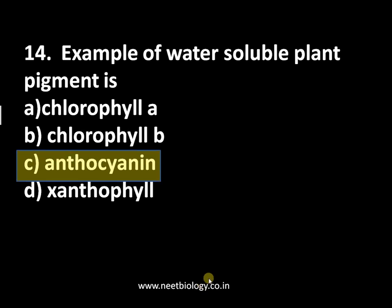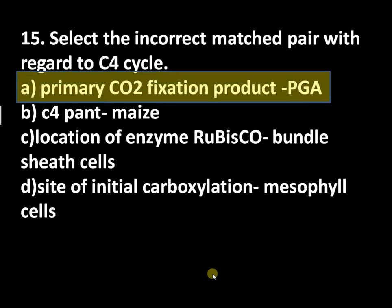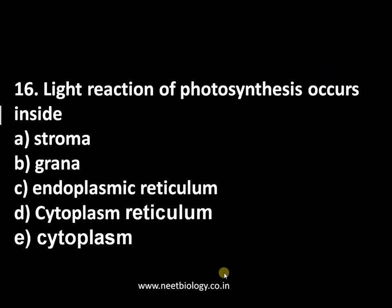Question number fourteen: an example of a water-soluble plant pigment is anthocyanin — refer to our video on pigments for more details. Question number fifteen: select the incorrect match with regard to the C4 cycle — option A: primary CO2 fixation product is PGA, option B: C4 plant is maize, option C: location of RuBisCO is bundle sheath cells, option D: site of initial carboxylation is mesophyll cells. The answer is option A — in the C4 cycle, the primary CO2 fixation product is oxaloacetic acid, not PGA. It is transported to bundle sheath cells where it is decarboxylated, releasing CO2 for the Calvin cycle.